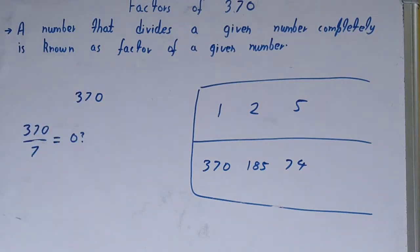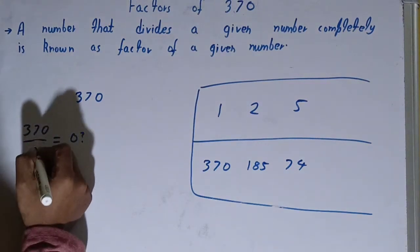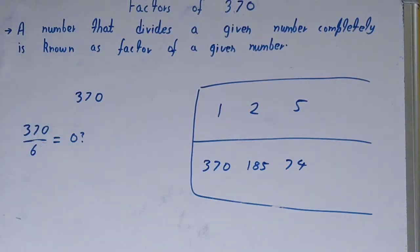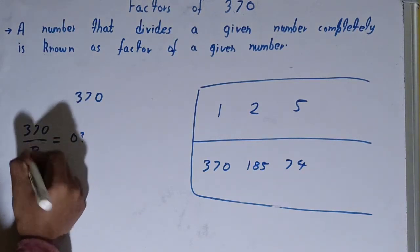After 5, we will check with 7. 7 into 0, 35, 20. Not possible. Let's check with 8. Sorry, 6, we forgot. 6 into 36, 10. Not possible. 7 we already checked. Let's check with 8.